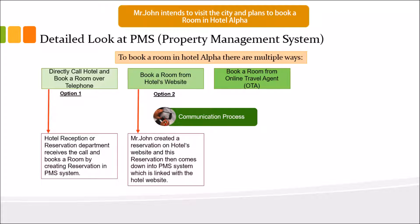The third option is to book a room through an online travel agent (OTA). If you physically visit a travel agency, they will search online for available hotels and create a reservation on your behalf through their system. The difference between an online travel agent and a physical travel agency is that an OTA is a website providing facilities for customers to choose hotels by area, region, and price.